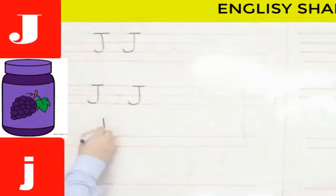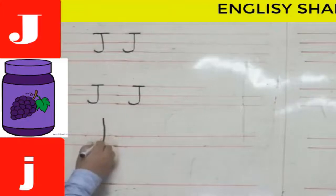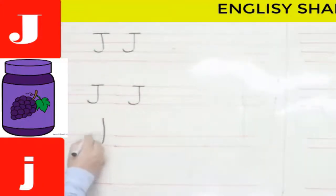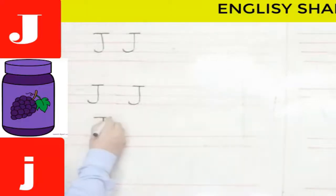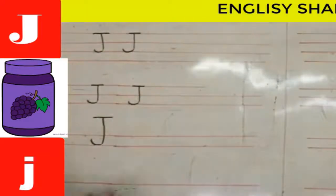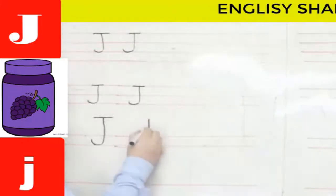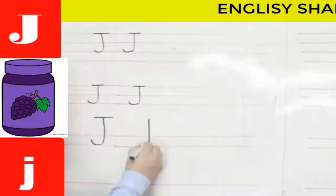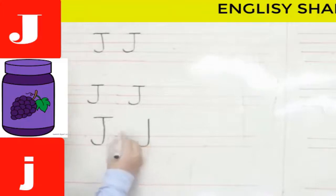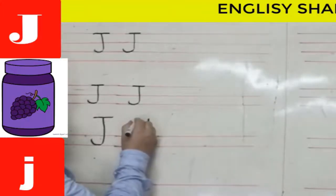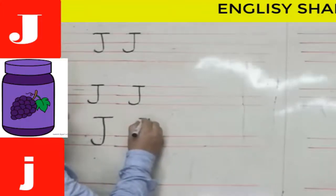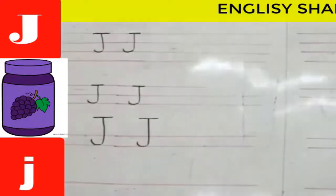When writing uppercase J on two lines, I start above the two lines, go down to the second line, make a curved line, then a sleeping line across the top. Again: above the two lines, go down to the second line, curve at the bottom, then a sleeping line across the top.